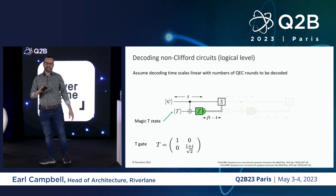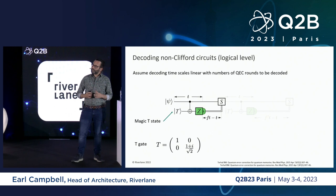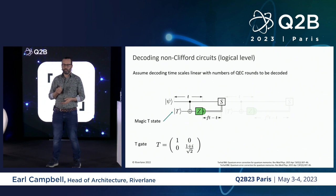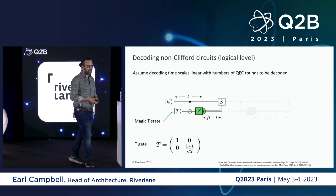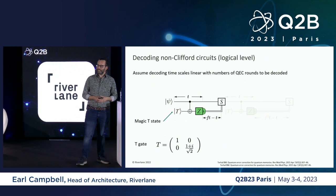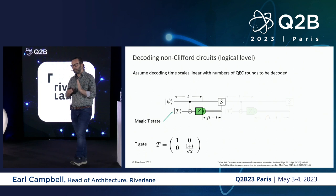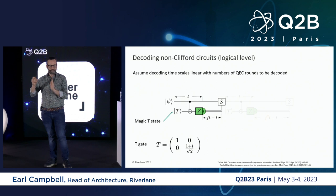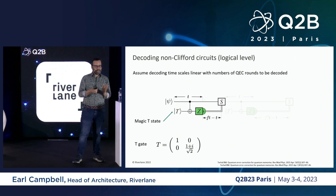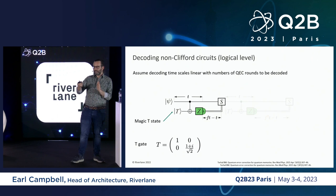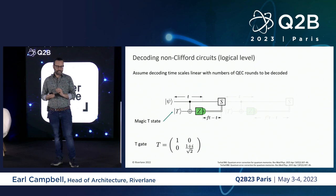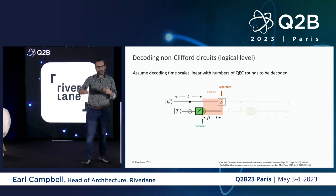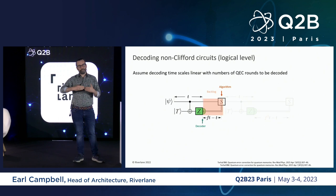Here's how I think about the backlog problem. Every line represents a logical qubit, encoding many many physical qubits, and we're trying to implement a logical T gate. The textbook way of doing this in most fault-tolerant architectures is to use magic state teleportation: we've got the T state, our state psi, we do a CNOT gate and then a measurement. After that measurement we apply a correction depending on the outcome. But in an error-corrected circuit there's a delay after the measurement because we need some time to do our decoding. That delay I've labeled FT minus T — this is what we call the backlog.